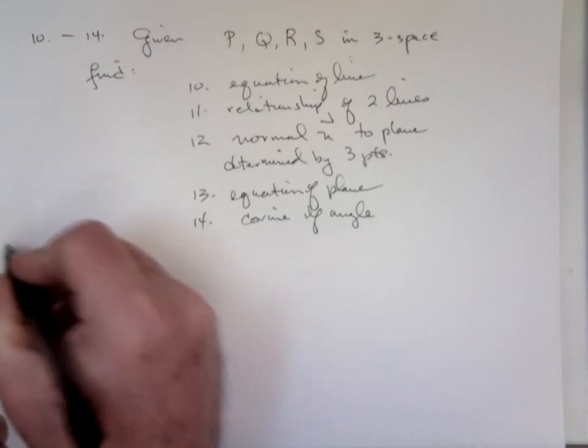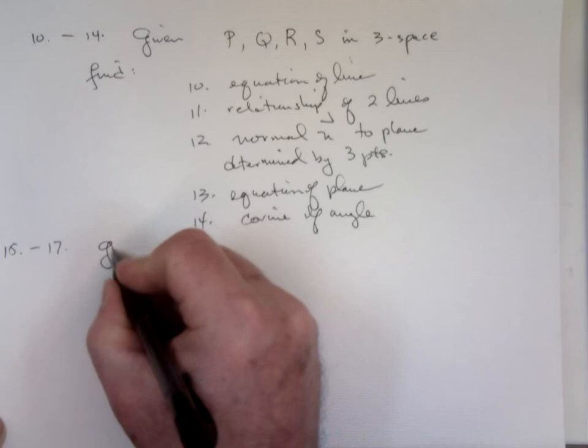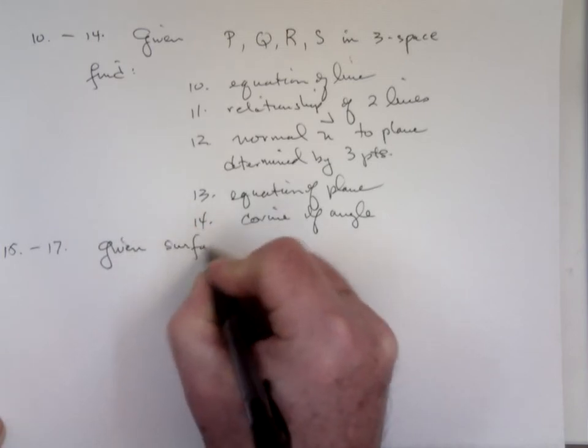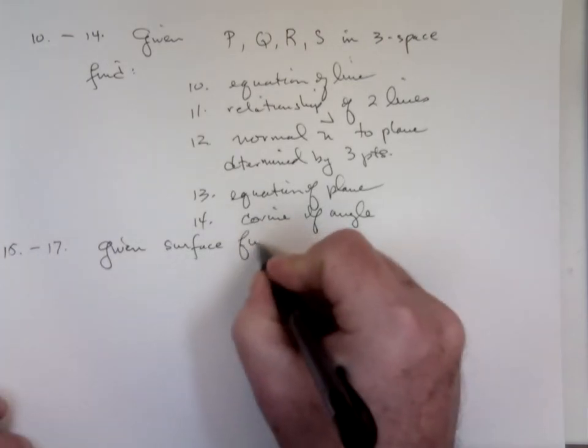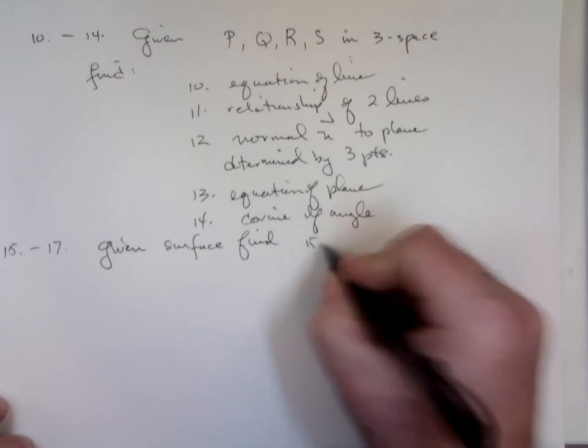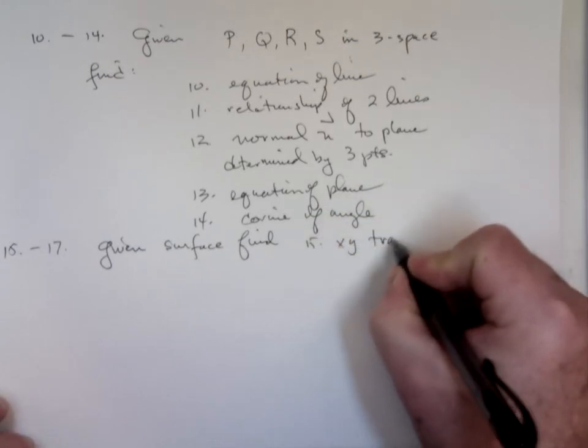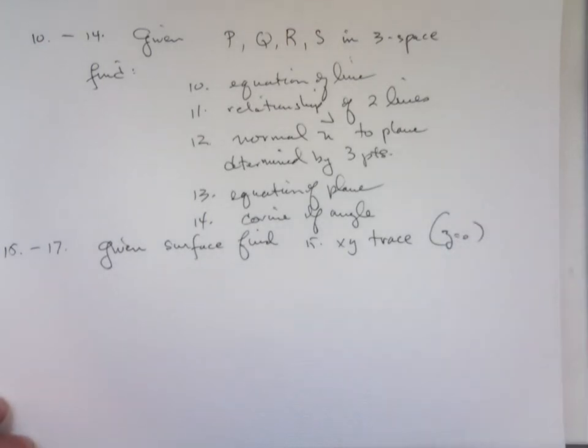15 through 17. There's more. Given a surface, some quadric surface. X squares and Y squares and Z squares. I'm going to ask you to find certain traces. So find XY trace. What do you do? You let Z equal zero. And determine what remains, what that is.